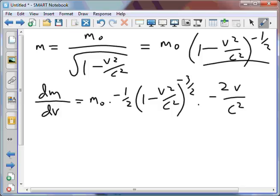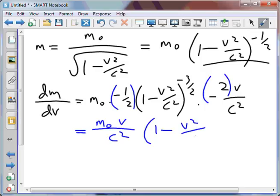Now as it turns out, a minus and a minus gives me a plus, and negative one half times 2 gives me a positive 1. So this can be further simplified as m, that rest mass, v over c squared, times 1 minus v squared on c squared to the negative three on two.